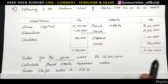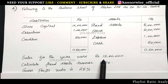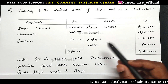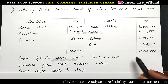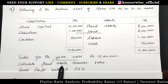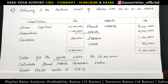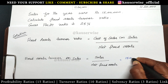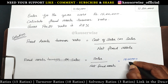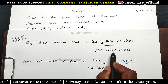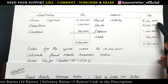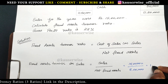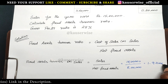In this problem, sales for the year are 15 lakhs and fixed assets are 8 lakhs. There is no depreciation in this problem. Calculating fixed asset turnover ratio on sales: 15 lakhs divided by net fixed asset of 8 lakhs gives an answer of 1.9 times. You can round up the figure.